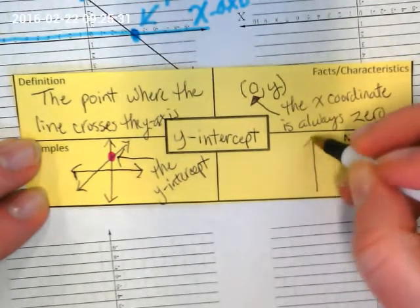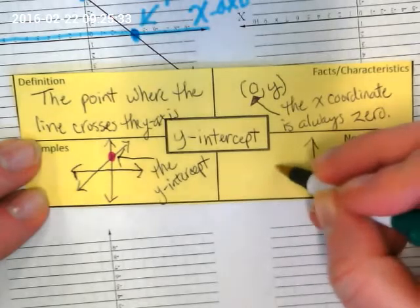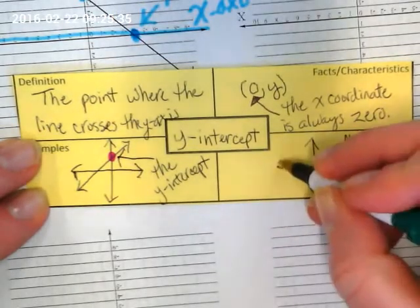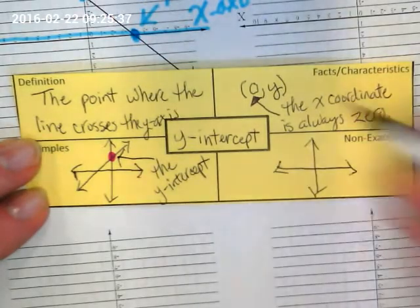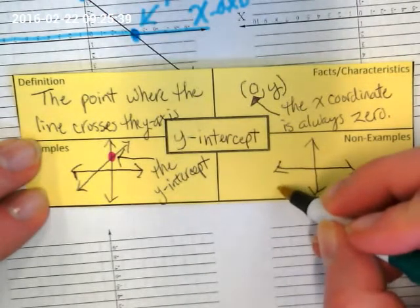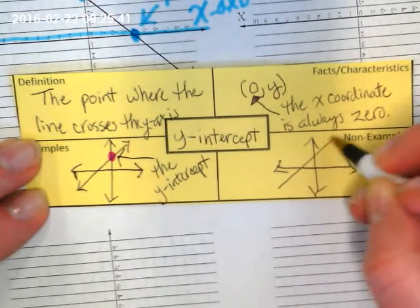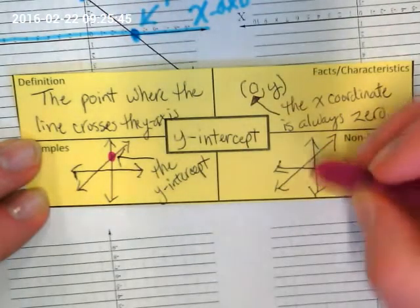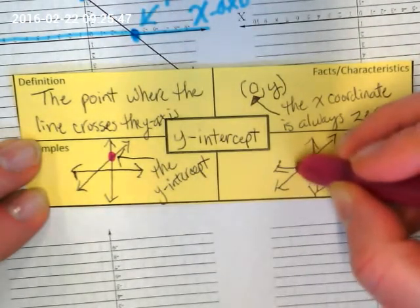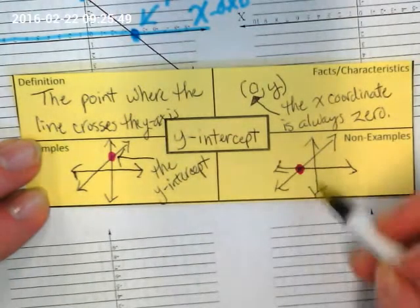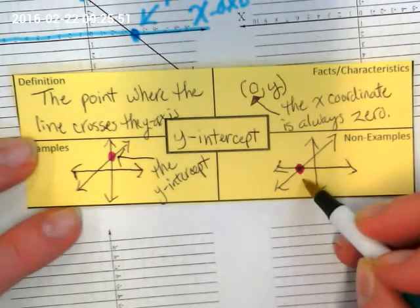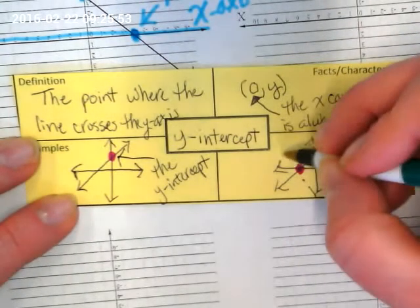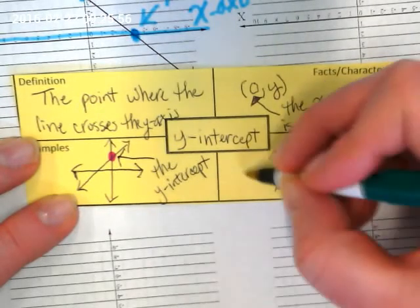For my non-example, I'm going to make another mini graph. And I'm going to make the same line. And this time, I'm highlighting on the x-axis. This is not the y-intercept. This is the x-intercept.